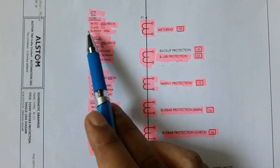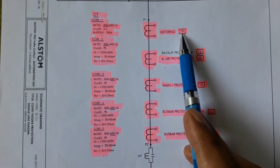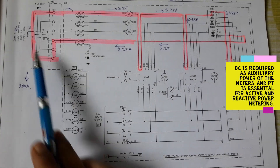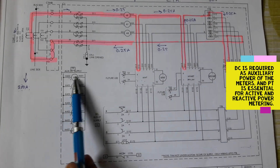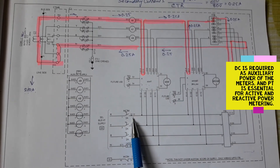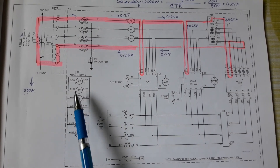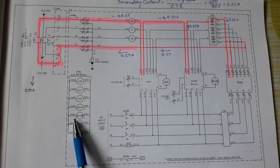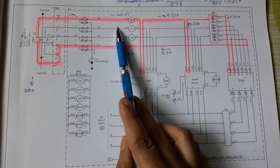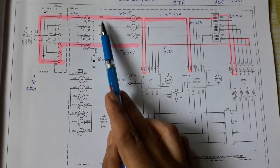Core 1 is the metering core and this metering core is connected with the metering circuit described in sheet number 9. In sheet number 9, besides CT connection, PT and DC connections are also shown. For PT connections, all wire ferrules are prefixed with E; for DC connections, prefixed with K; and for CT connections, specifically for the metering core, all wire ferrules are prefixed with D.